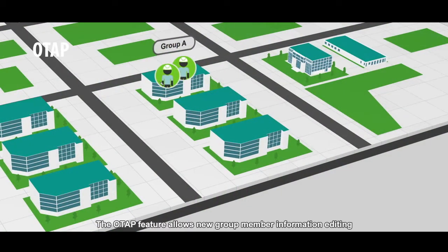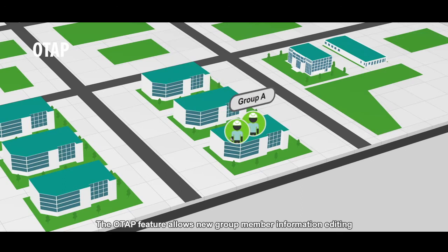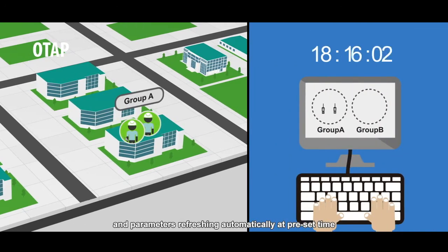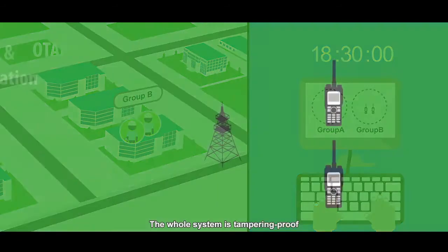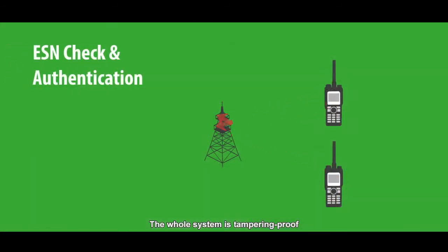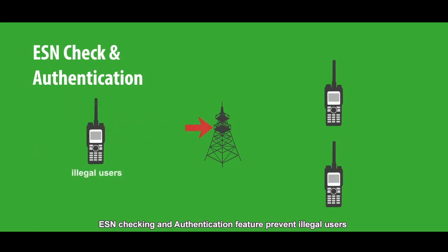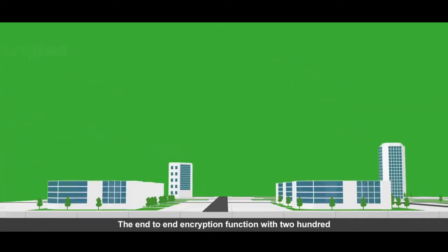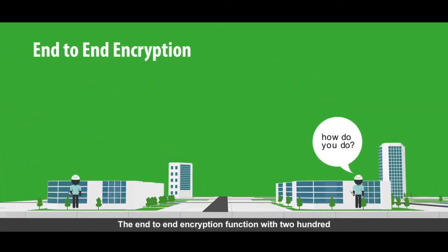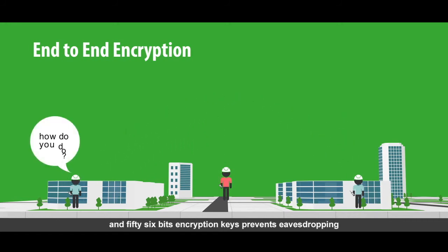The OTAP feature allows new group member information editing and parameters refreshing automatically at preset time. The whole system is tampering proof. ESN checking and authentication features prevent illegal users from registering to the system. The end-to-end encryption function with 256-bit encryption keys prevents eavesdropping.